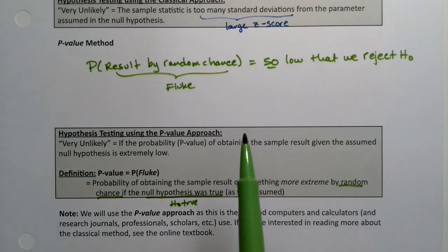The p-value approach is what we tend to use more frequently. It's what is used by computers and calculators, research journals, etc. If you want to see about the classical method, you're more than welcome to look at it in the online textbook.